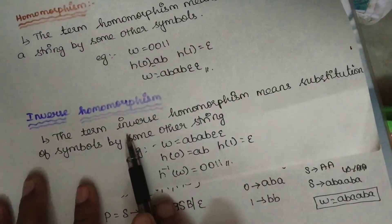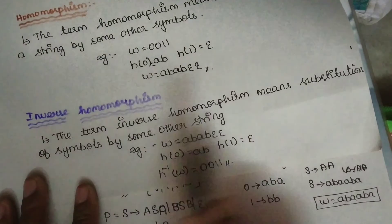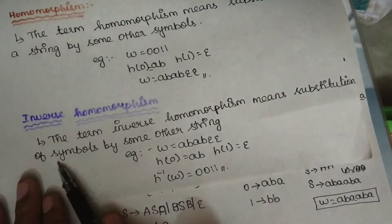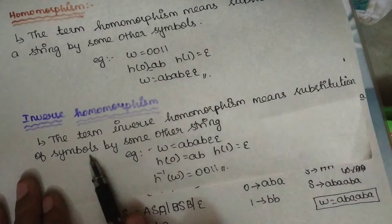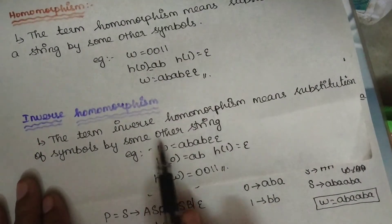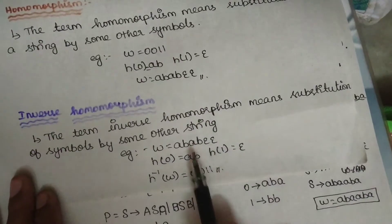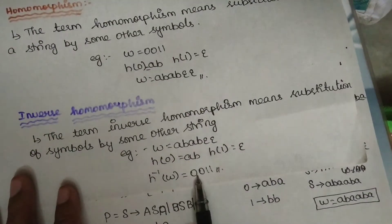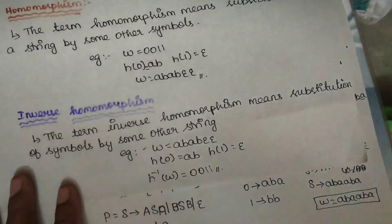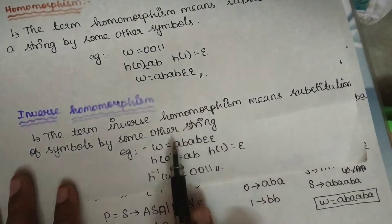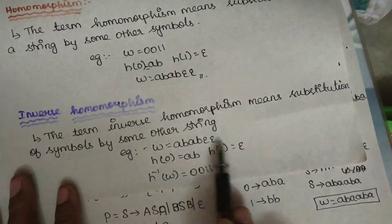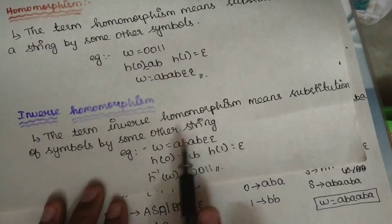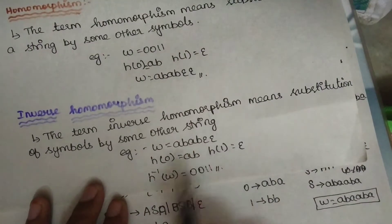Because there is also inverse homomorphism, which is the opposite — it is the substitution of the symbols by some other strings. What you say about a string — if you see AB, AB, null, null — here is the string. Then you can substitute it back to symbols.